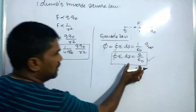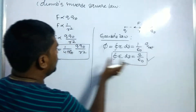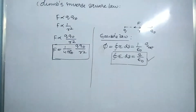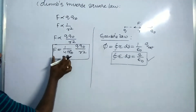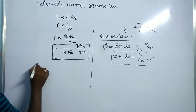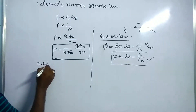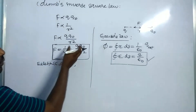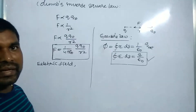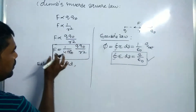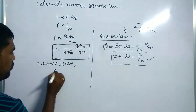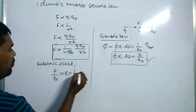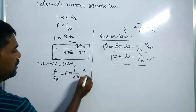So now we have to derive this Gauss law by using Coulomb's inverse square law. From Coulomb's inverse square law, we can write that the intensity of the electric field is the force acting upon a charge. So E = F/Q₀, which equals (1/4πε₀) × Q/R².